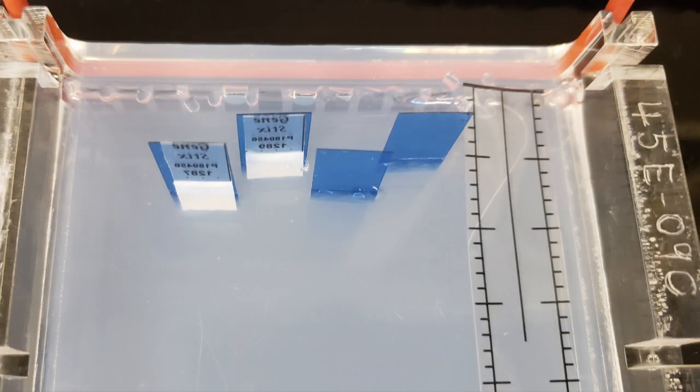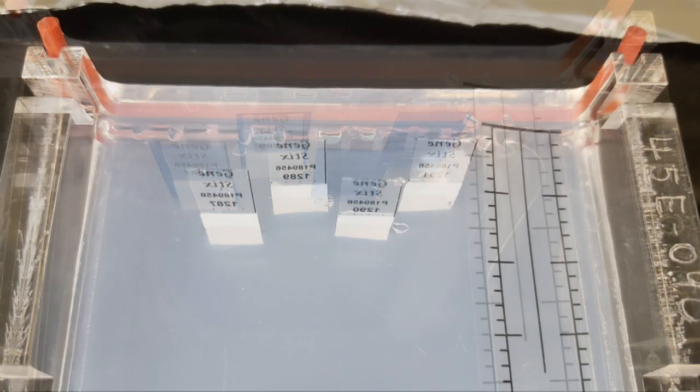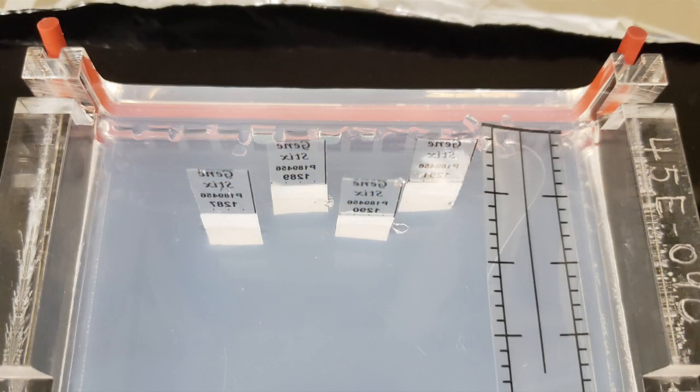With the DNA locator tab still in place, insert the GeneStix into the gel by sliding them behind the DNA locator tabs. Remove the DNA locator tabs so that the GeneStix is left in the gel.